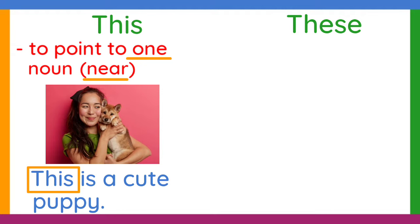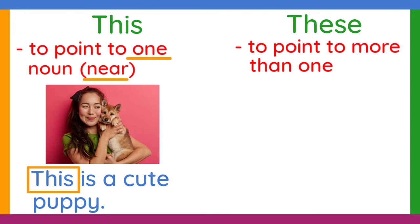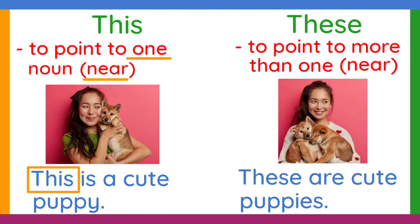On the other hand, these is used to point to people or things — plural nouns — meaning there's more than one. And they are near the person talking. For example, these are cute puppies. In this sentence, we use these because the person is holding the puppies.